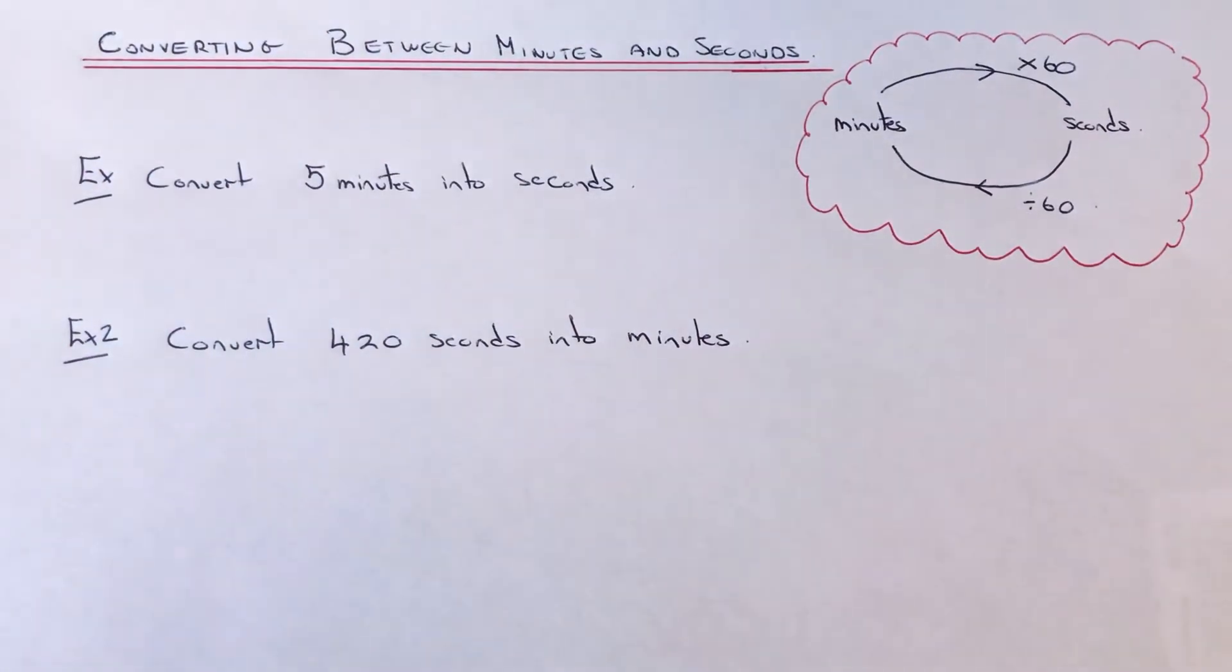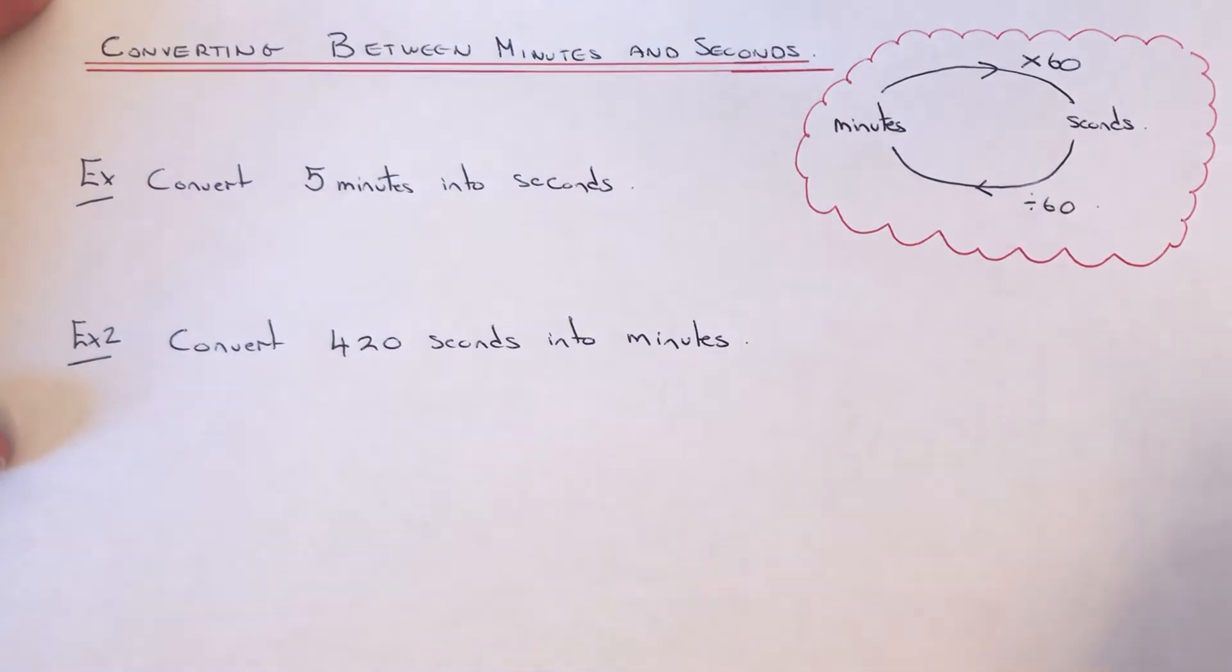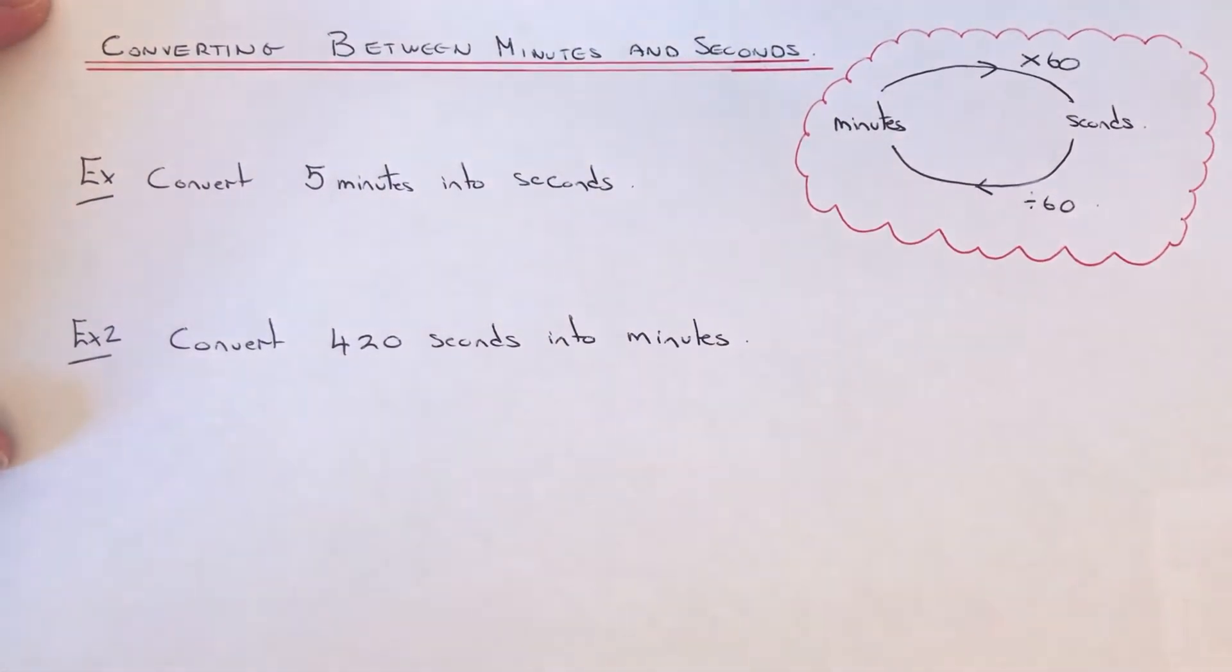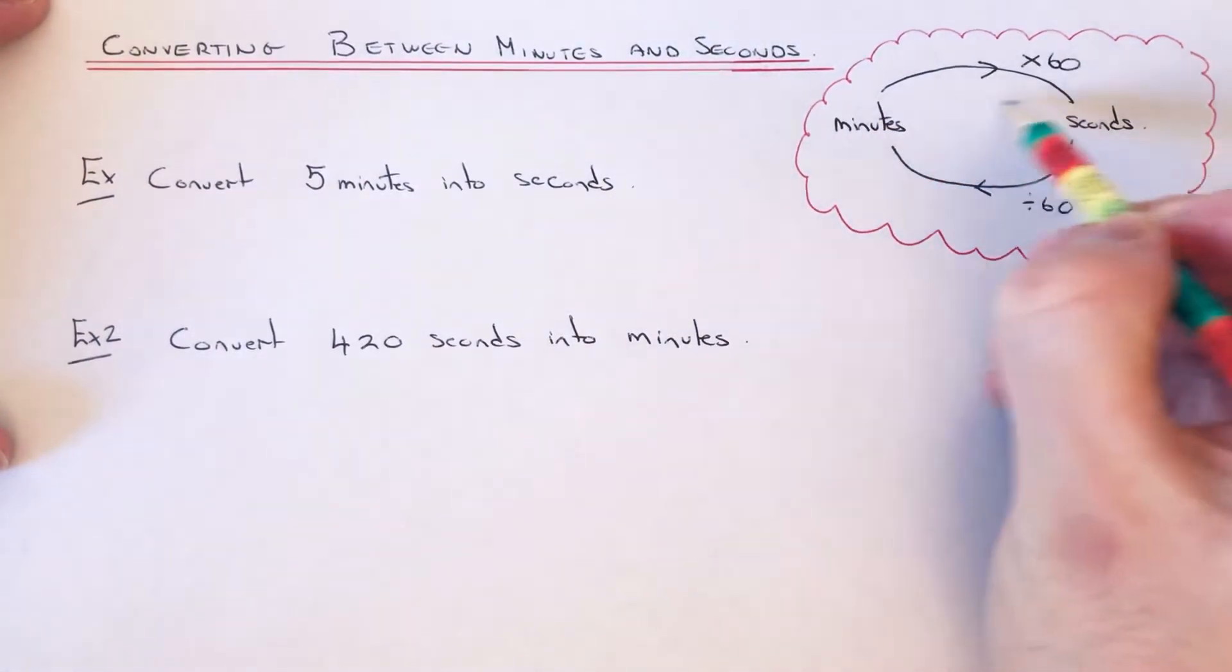Hi guys, welcome back. Today I'm going to show you how to convert between minutes and seconds. To do this, you need to know that there's 60 seconds in a whole minute. So therefore, if you're changing minutes to seconds, you will be multiplying the number by 60.